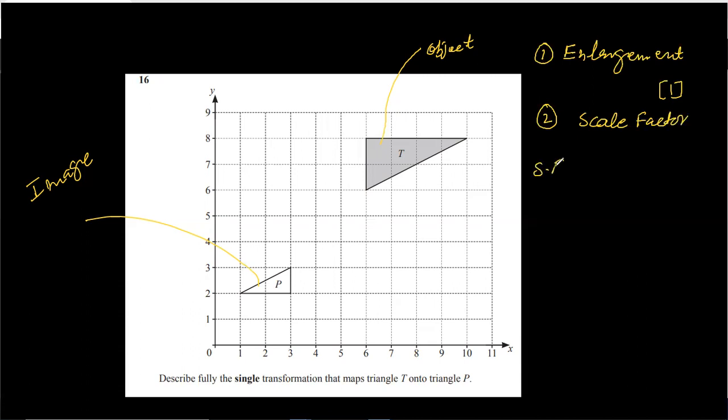The specific scale factor formula is length of image divided by length of object. Now, an interesting thing in this shape is that their corresponding sides, like this one and this one, both are inverted. In the inverted corresponding side situation, your scale factor will be negative.